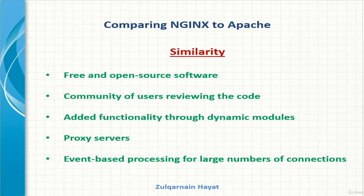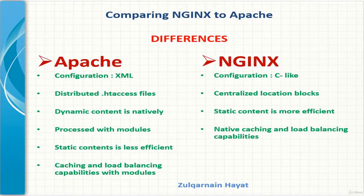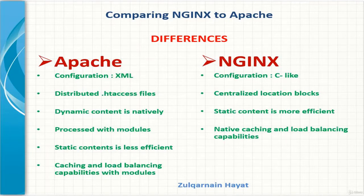This could easily lead to the server consuming all resources under very heavy load. By adding event-based processing, newer versions of Apache are able to handle a high number of connections on par with NGINX. One of the most clear differences is the configuration format: Apache uses a format based on XML and can be verbose with opening and closing tags for each section, while NGINX uses syntax very similar to the C programming language, with directives and blocks defined by opening and closing brackets.